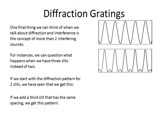If we put in a third slit with the same spacing, the primary maximum stays in the same spot, but the minimum actually forms what's called a secondary maximum. So we have a primary maximum and a secondary maximum, and the secondary is much, much lower in intensity.